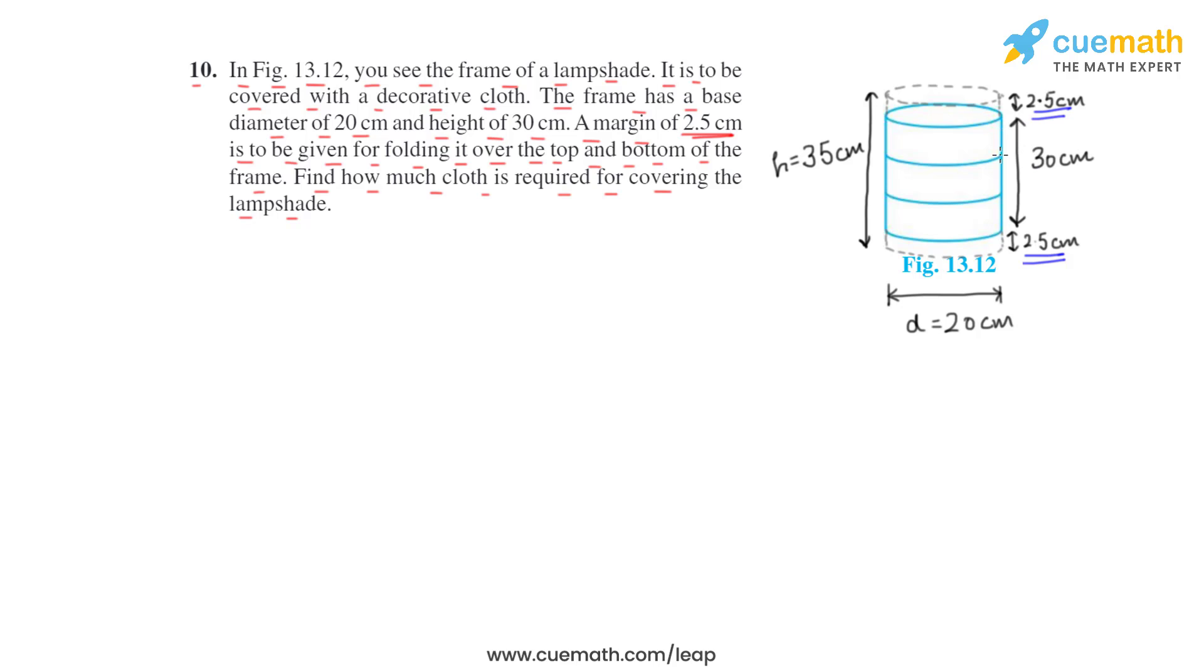30 cm was the height of the lampshade, so the total height of the cloth will be 2.5 plus 2.5, that is 5, and plus 30, so 35, and diameter is 20 cm.